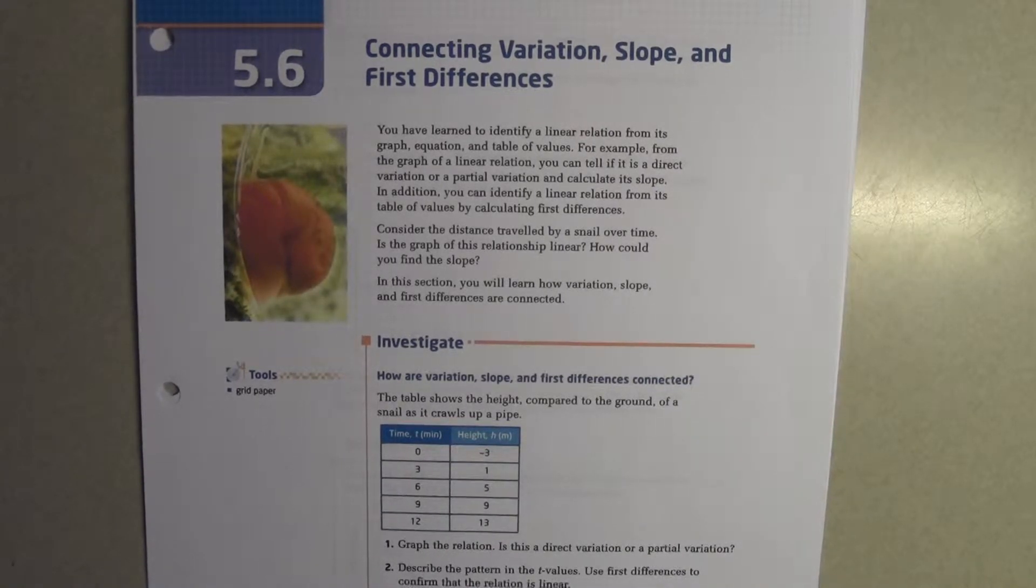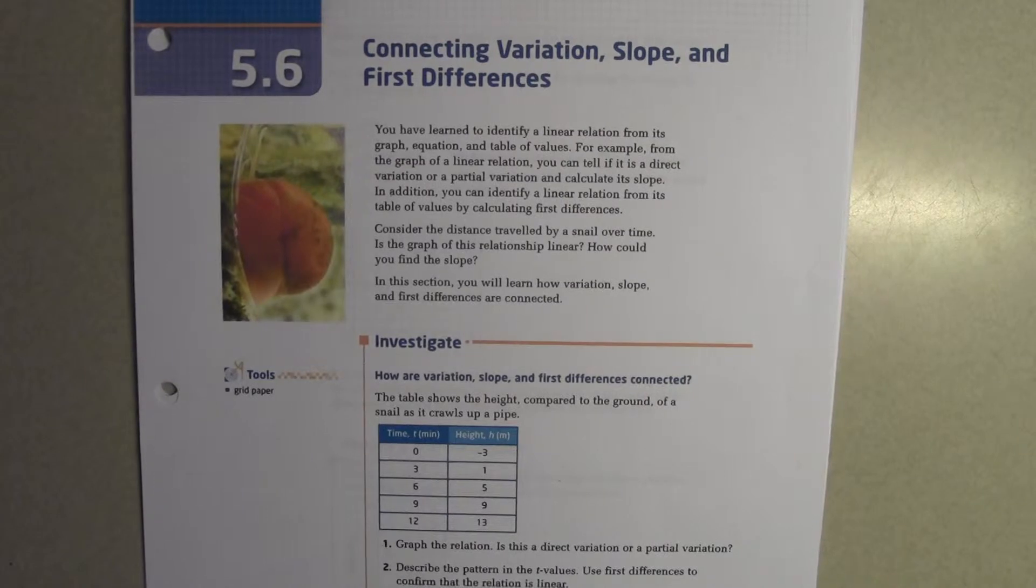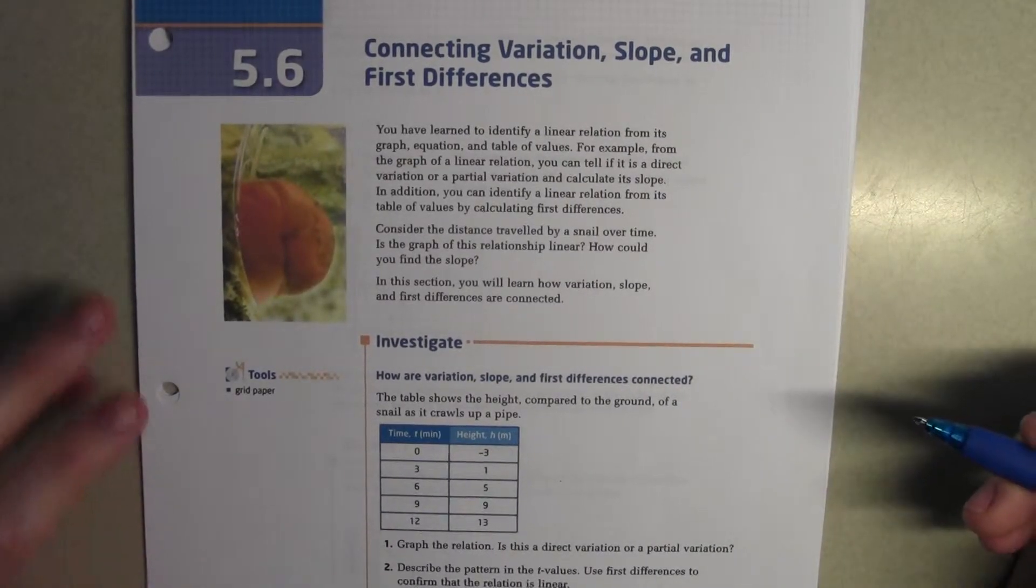Consider the distance traveled by a snail over time. Is the graph of this relationship linear? How can you find the slope? In this section, you will learn how variation, slope, and first differences are connected. The table shows the height compared to the ground of a snail as it crawls up a pipe. Graph the relation. Is this direct variation or partial variation?